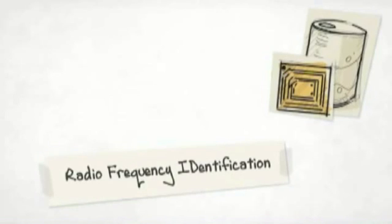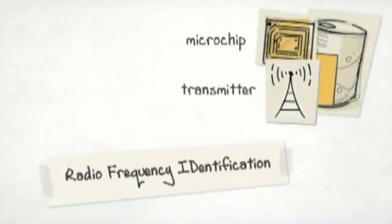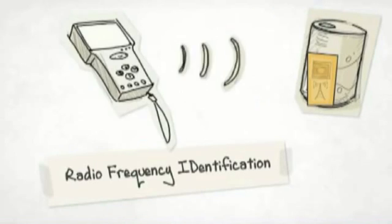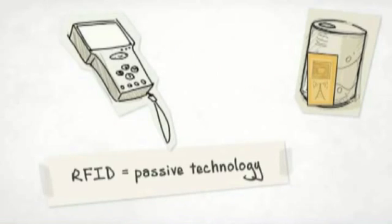While RFID tags contain a small microchip and a transmitter, they can only be activated by an RFID reader, to which the tag returns its signal. That's why RFID is called a passive technology.